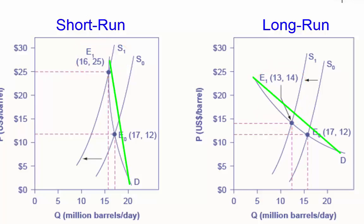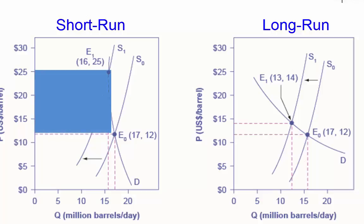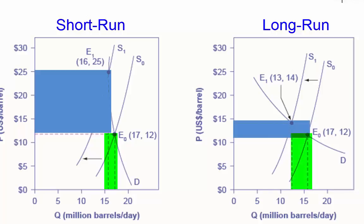However, the shape of the demand curve D is different in both graphs. In the graph on the left, demand is less elastic, and in the graph on the right, demand is more elastic. As a result, the shift in supply can result either in a new equilibrium with a much higher price and an only slightly smaller quantity, as in the graph on the left, or in a new equilibrium with only a small increase in price and a relatively larger reduction in quantity, as in the graph on the right.